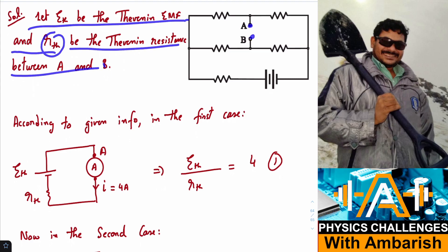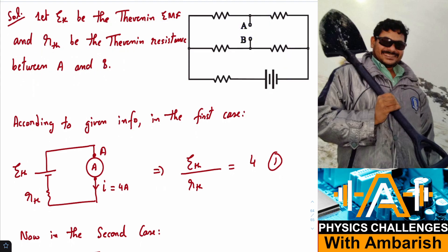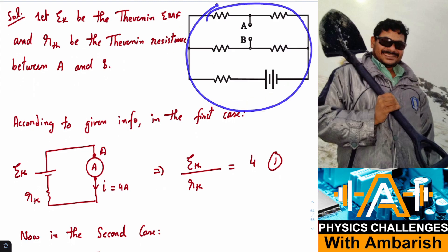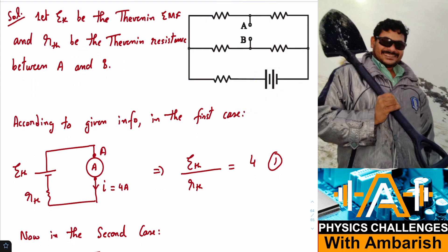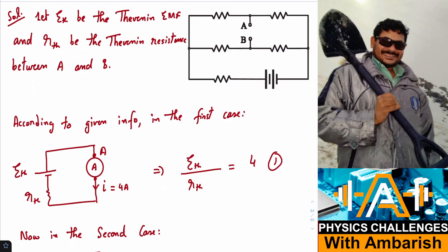I am Thevenizing the rest of the circuit between points A and B. According to Thevenin's theorem, we can replace the entire circuit containing the resistors and battery by a single battery and a single resistance. So let E_TH be the Thevenin voltage and R_TH be the Thevenin resistance between A and B.